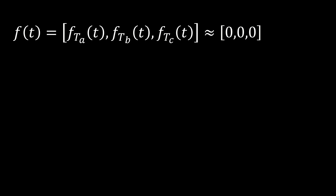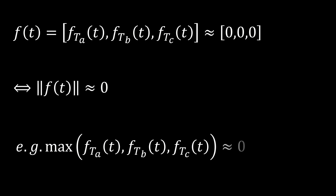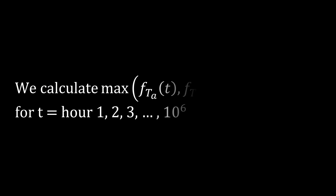We can express this as a three-dimensional vector f composed of f_ta, f_tb, and f_tc being close to zero. To measure this, we take a norm — for example, the infinity norm (the maximum of the three values) or the one-norm (their sum). We arbitrarily use the infinity norm — the maximum of the three distances — and calculate this maximum distance for all hours within a long period of many years.